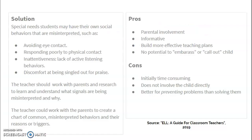An alternate solution we found is that special needs students may have their own social behaviors that are misinterpreted, such as avoiding eye contact, responding poorly to physical contact, inattentiveness, lack of active listening behaviors, or discomfort at being singled out for praise. The teacher should work with parents and research to learn and understand what signals are being misinterpreted and why, and could work with parents to create a chart of common misinterpreted behaviors and their reasons or triggers.